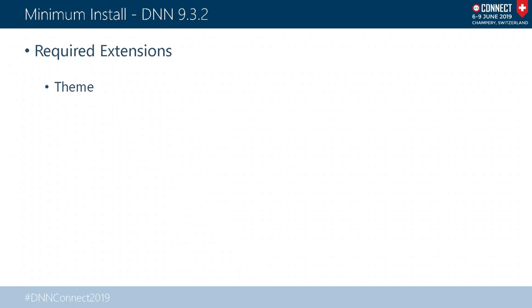DNN handles login internally — if you put `?ctl=login` it will still give you a login UI even without a module, so you can take those out. The only thing you need in a DNN install is a theme. The default theme has a dependency on DDR Menu because it wants to render the menu, so you need the DDR Menu module. And you have to have some kind of control panel. These are the only required dependencies.